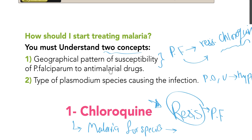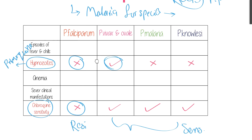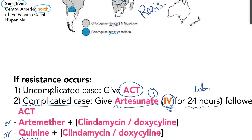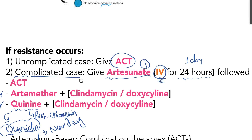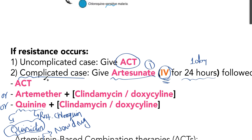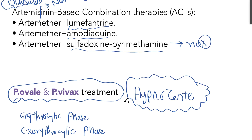To summarize: P. falciparum is usually chloroquine-resistant, so we use other drugs. For uncomplicated resistant cases, give ACT. For complicated cases, give artesunate IV for 24 hours — artemisinin drugs have a very short half-life making them ideal for acute initial therapy — then follow with a long-acting drug. For P. ovale and P. vivax with hypnozoites, Primaquine must be given.